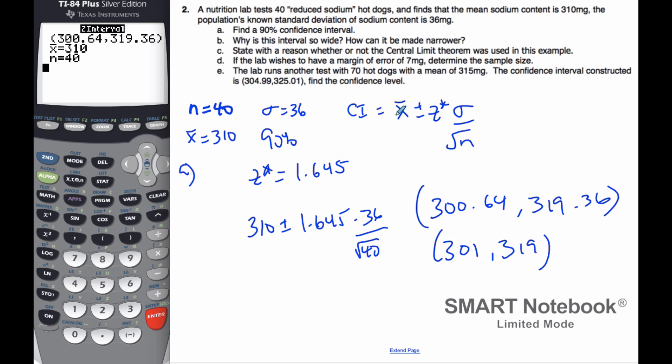Part B says, why is this interval so wide? The interval is really 18 milligrams. Well, the reason why it's so wide... the confidence level is 90%. So if I was to run this procedure 100 times, 90% of them would capture the true mean of sodium content of these hot dogs. Right now it's a range of 18 milligrams, which might be a lot for hot dogs. The reason why it's so wide is because it's 90%.